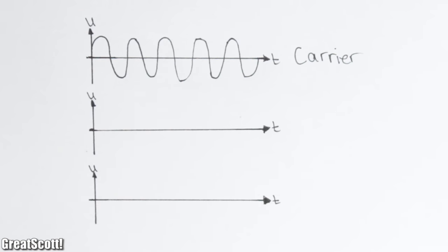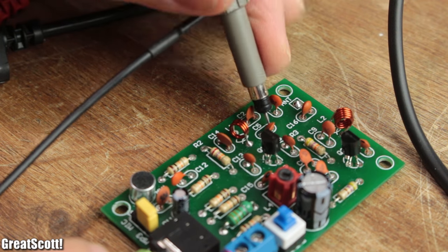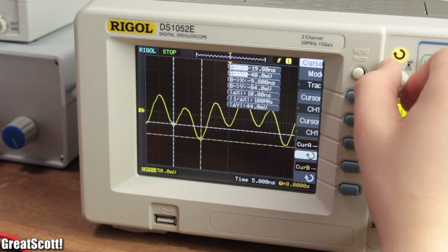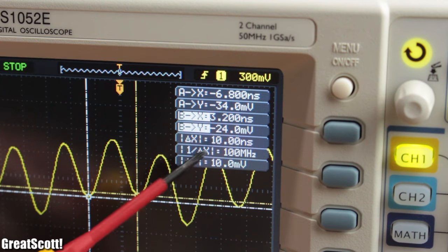This is also called the carrier frequency. But this oscillation alone does not contain any information from our audio signal we want to transmit. Or does it?